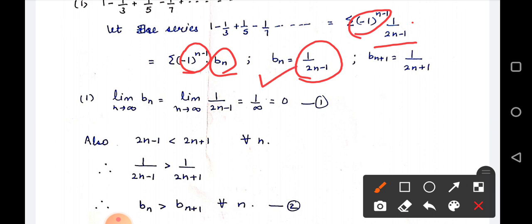Because in the Leibniz test, to check convergence of an alternating series, there are 2 conditions. First, the nth term is greater than or equal to the (n+1)th term — meaning the series is decreasing. Second condition: limit as n approaches infinity of an equals 0. If both conditions are satisfied for an alternating series, then by Leibniz test the series is convergent.